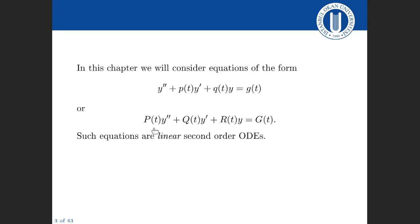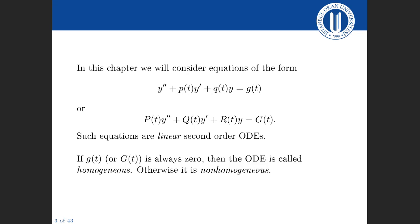We might also have a function in front of the y double prime term, looking at things like capital P y double prime plus capital Q y prime plus capital R y equals capital G. Again, this is a linear second-order ordinary differential equation. If g — small g or big g — is always zero, the equation is called homogeneous. If we have a function which is not always zero, the equation is non-homogeneous.